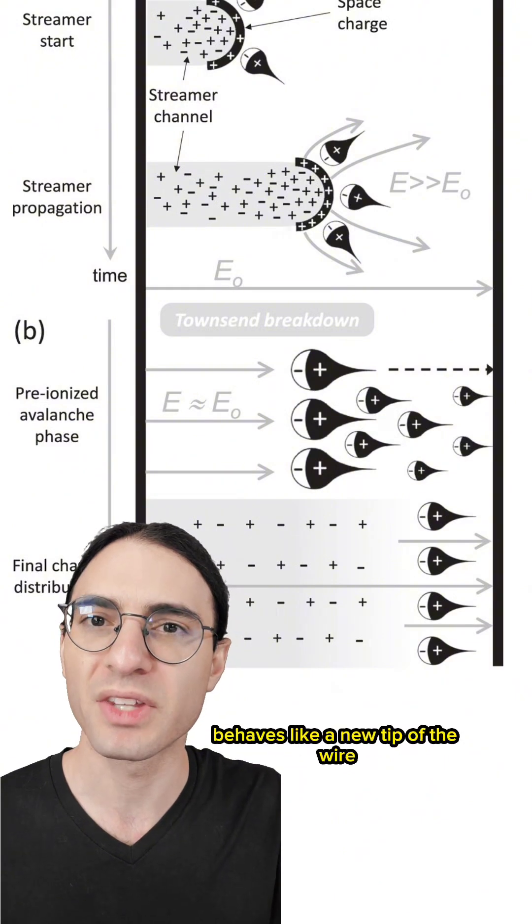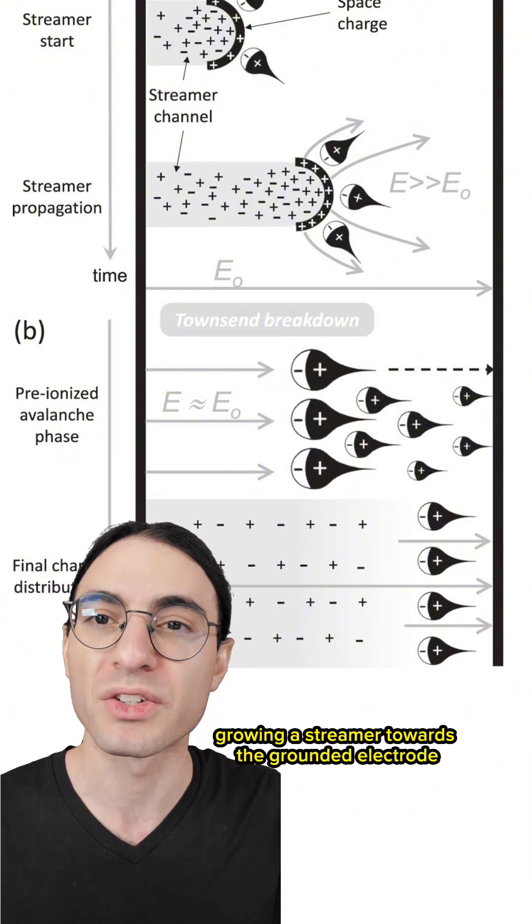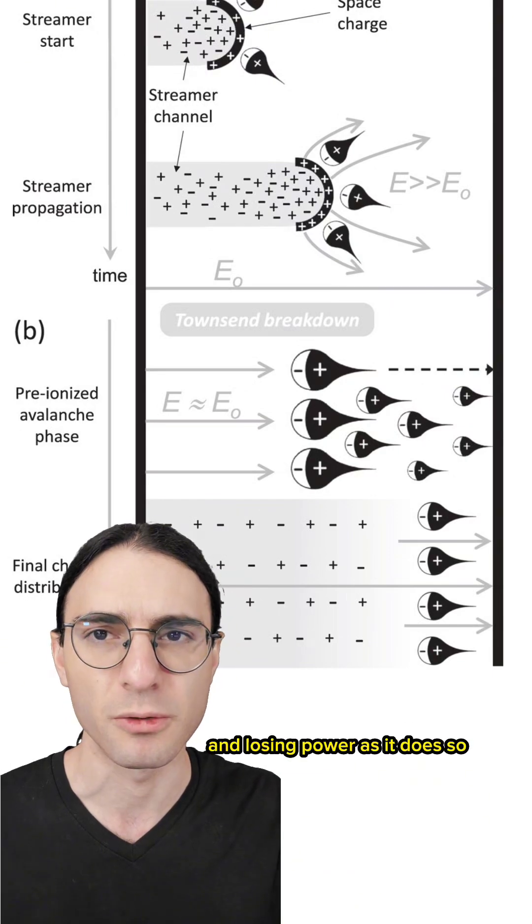Then because the initial electron has now created a small cascade of electrons flowing towards the positive electrode, the tip of that cascade behaves like a new tip of the wire. So the process stretches out from the wire, growing a streamer towards the grounded electrode and losing power as it does so.